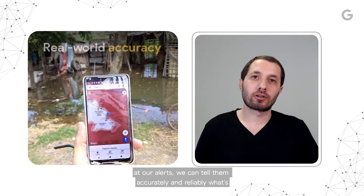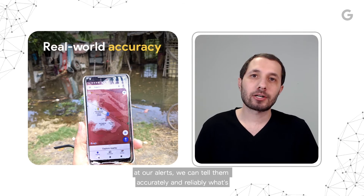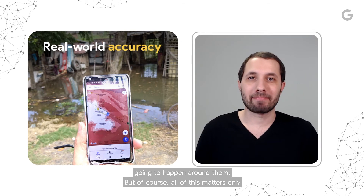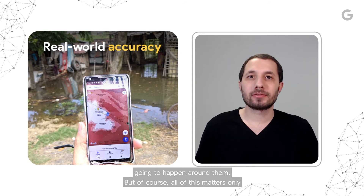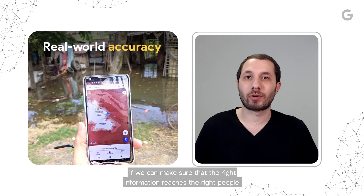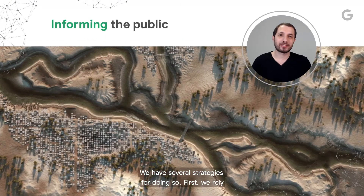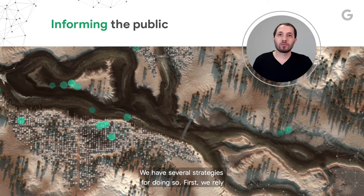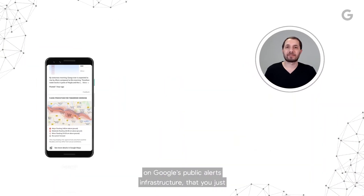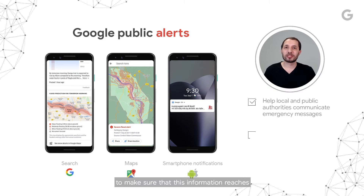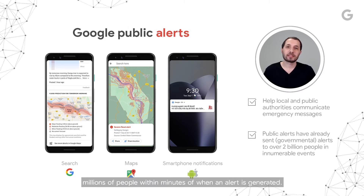This means that when people look at our alerts, we can tell them, accurately and reliably, what's going to happen around them. But of course, all this matters only if we can make sure that the right information reaches the right people. We have several strategies for doing so. First, we rely on Google's public alerts infrastructure to make sure that this information reaches millions of people within minutes of when an alert is generated.